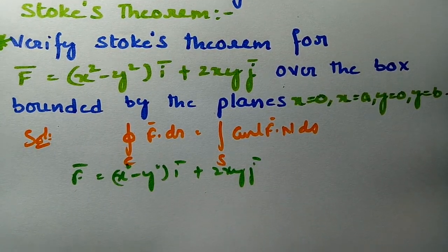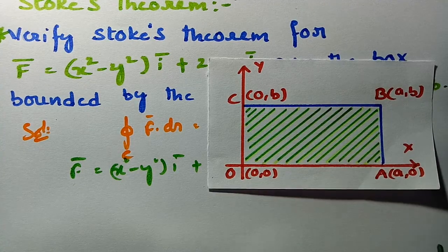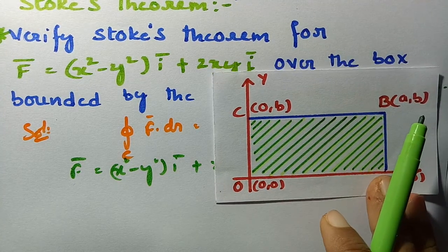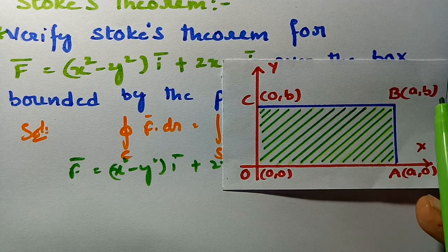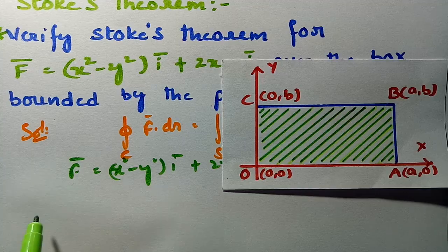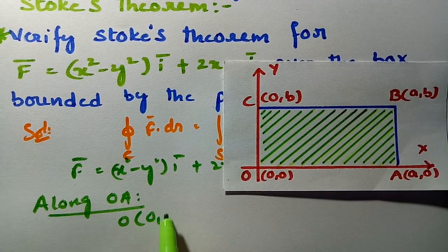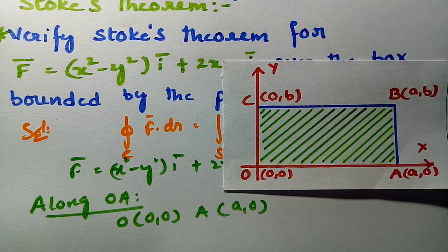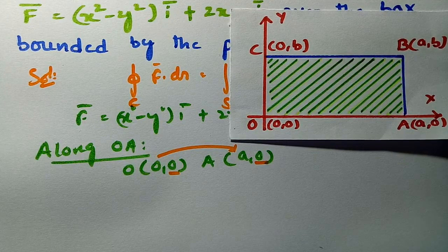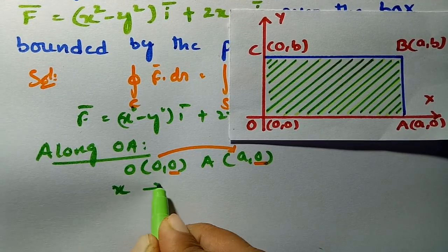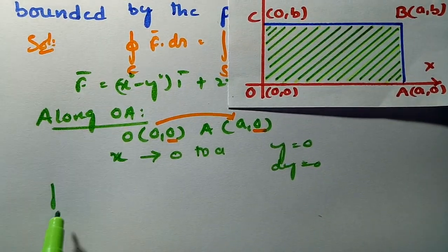First I am going to solve through the line integral. The box is formed by the points O(0,0), A(a,0), B(a,b), and C(0,b). Along OA, x varies from 0 to a and y is constant at 0, so dy = 0.